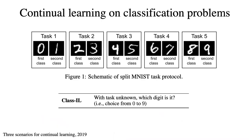We will focus on continual learning on classification problems in this talk. Taking MNIST as an example, there are 10 classes in the dataset. We separate the dataset into five subsets, and each subset has two classes. In class incremental learning, the model needs to do classification from all seen classes.